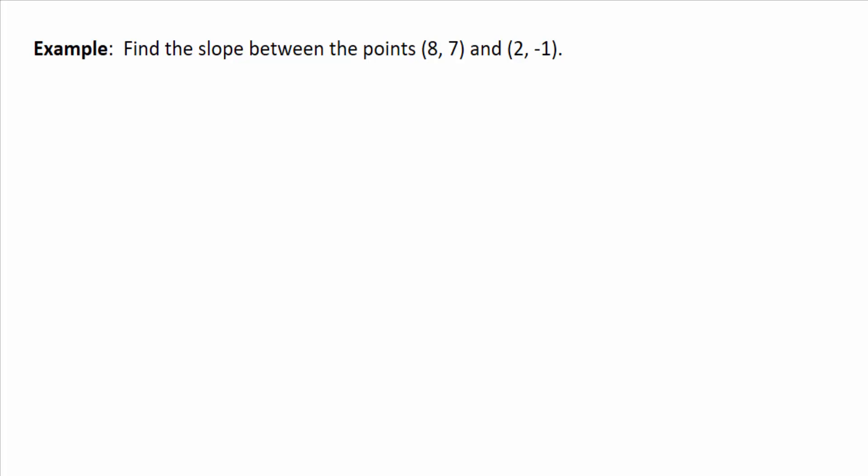So you can find the slope from the graph. Can you find it just from two points on a line? Or, you know, any two points form a line, so you could form a line between these two points. So in this example, it says find the slope between the points (8, 7) and (2, -1).